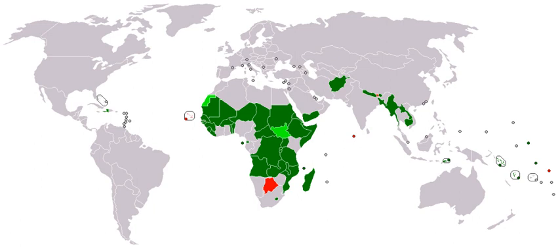There is no established convention for the designation of 'developed' and 'developing' countries or areas in the United Nations system. In common practice, Japan in Asia, Canada and the United States in Northern America, Australia and New Zealand in Oceania, and Europe are considered 'developed' regions. In international trade statistics, the Southern African Customs Union is also treated as a developed region and Israel as a developed country. Countries emerging from the former Yugoslavia are treated as developing countries, and countries of Eastern Europe and the Commonwealth of Independent States in Europe are not included under either developed or developing regions.